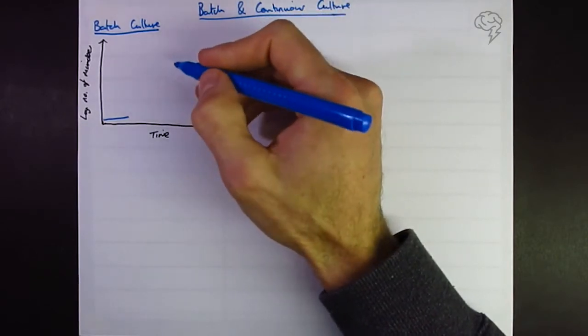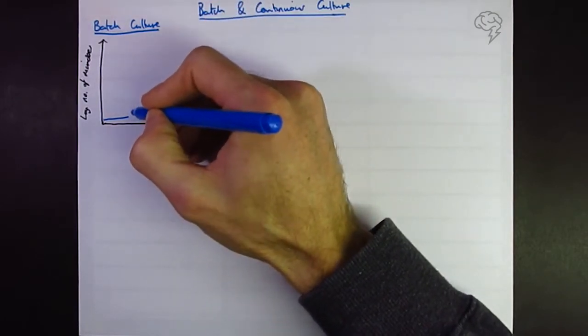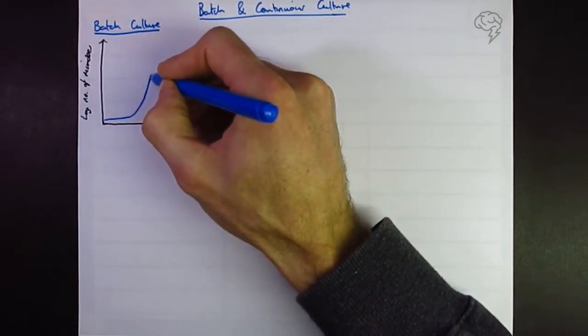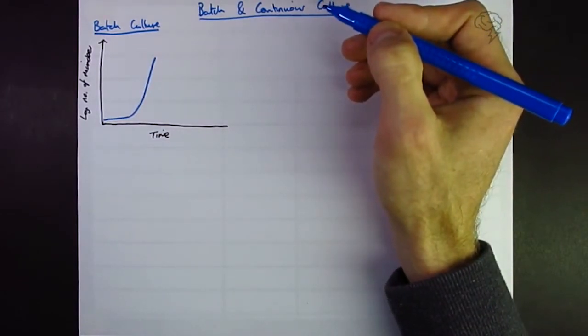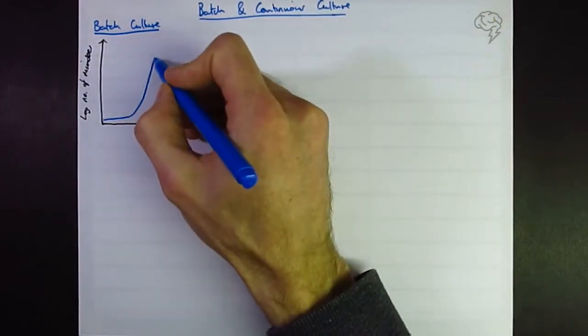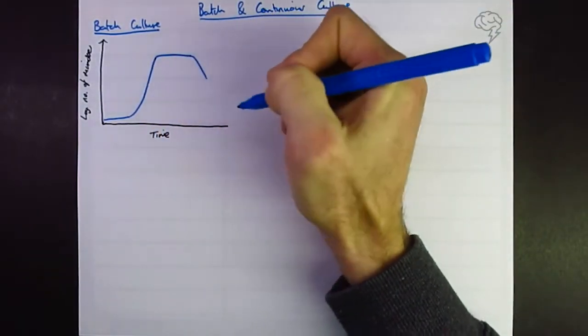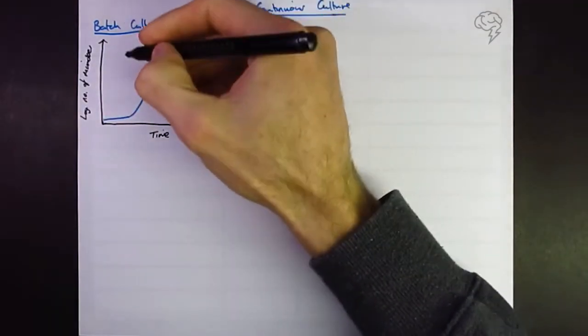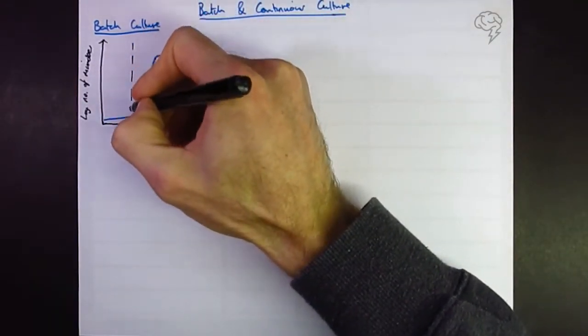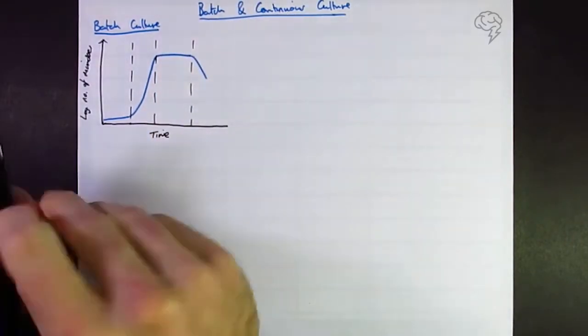So maybe there's lactose in there, you may have studied the lac operon, so they're going through the process of transcribing the genes so they can hydrolyze lactose. Then they're going to have the enzyme and they're going to go through a very rapid phase of increasing in numbers. Then they're going to level off and then they're going to decrease. So these are our four phases and I'm going to delineate these with vertical dotted lines and we're going to label them up.